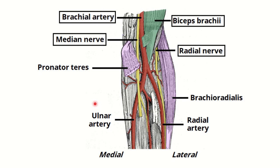Let's look at the antecubital fossa. Here is the antecubital fossa, and we can see the different structures within it. There are four main structures: the radial nerve, the biceps brachii tendon, the brachial artery, and the median nerve. These are the contents of the antecubital fossa.